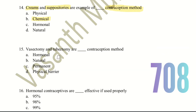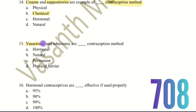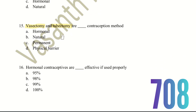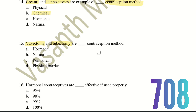Fifteenth question: vasectomy and tubectomy are which type of contraception method? The choices are hormones, natural, permanent, or physical barrier. Vasectomy and tubectomy involve surgery. The right answer is permanent method of contraception. Vasectomy is for males and tubectomy is for females. Once surgery is done, it permanently affects childbearing ability — hence these are the permanent contraception methods.